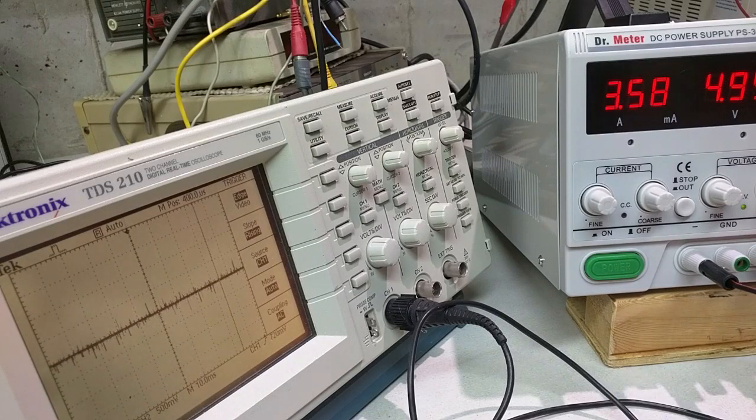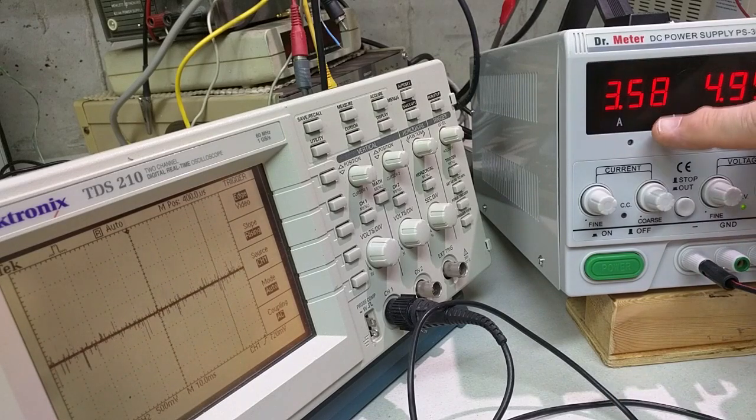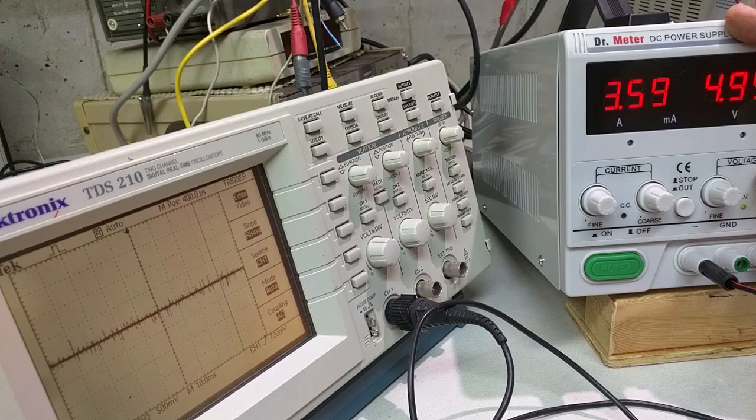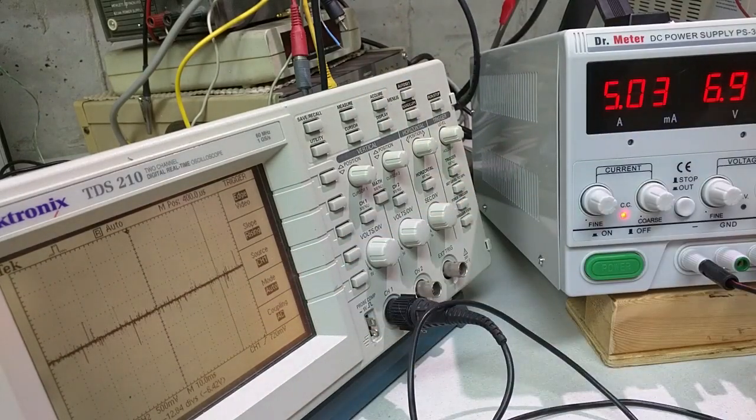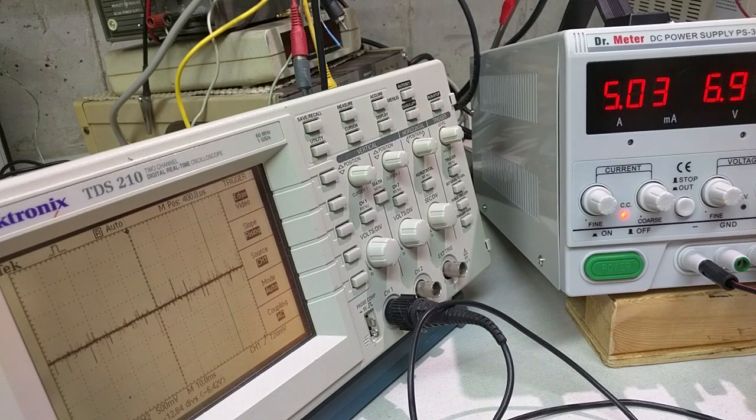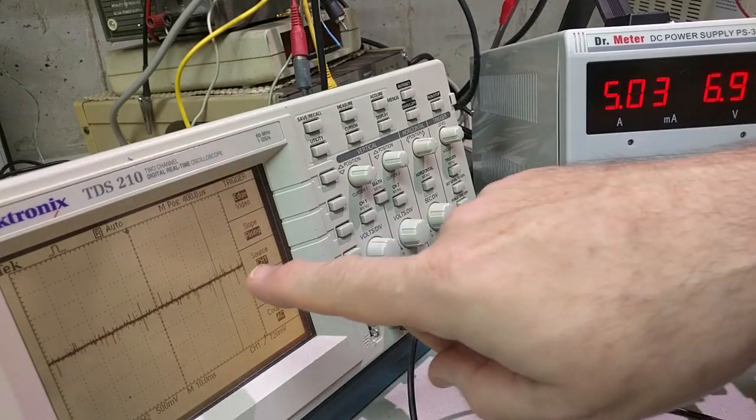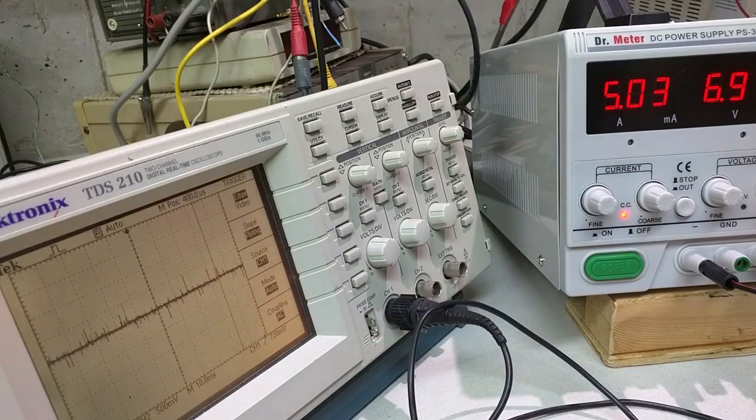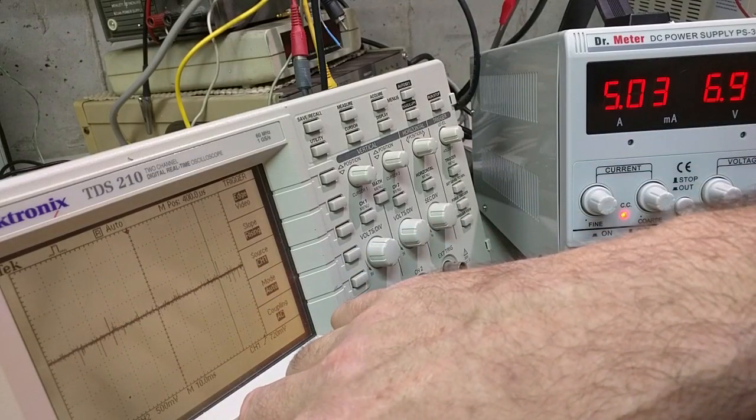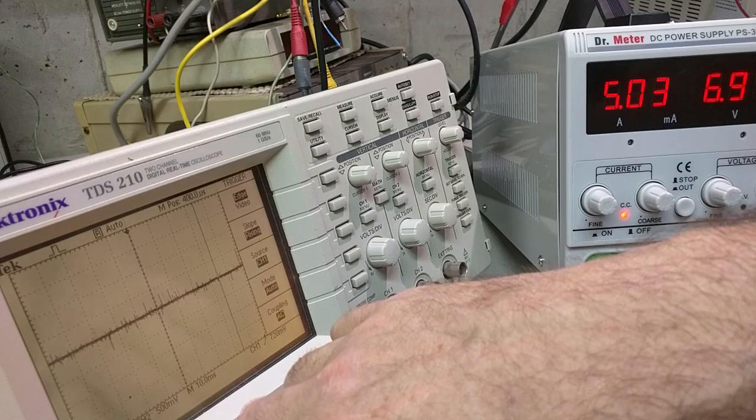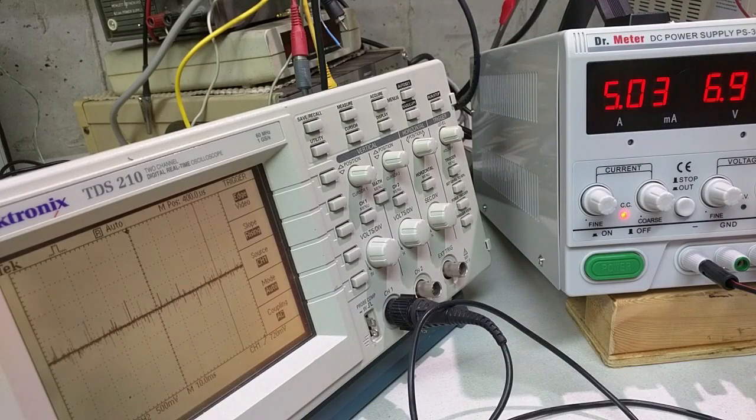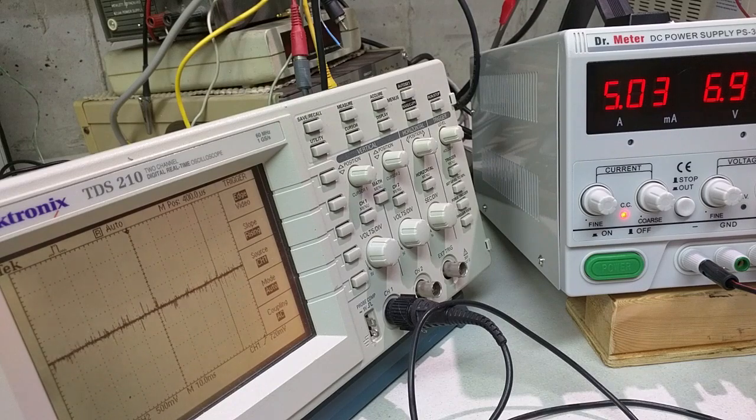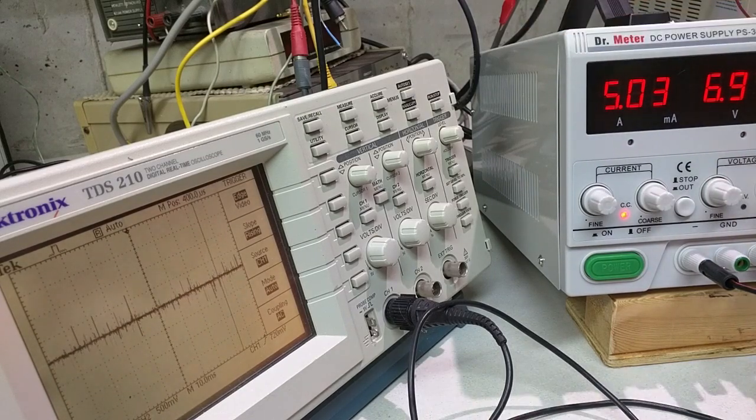And now you can see under load it jumped up to 5 amps. And what you notice is it's producing 6.97 volts at 5 amps. It's fully loaded the current at that voltage. And you can see the ripple is still less than 500 millivolts. So that's really good. That means this thing under the full load, it's less than 500 millivolts ripple. That's what you want. So that shows that it's a very clean power supply.